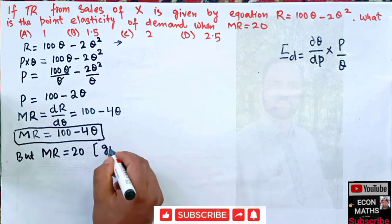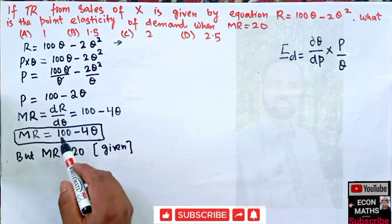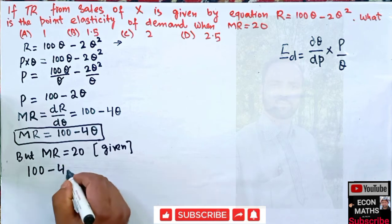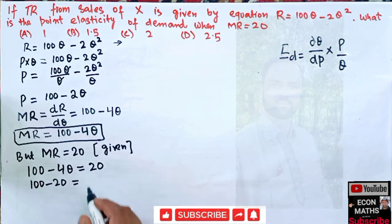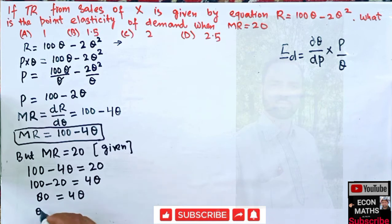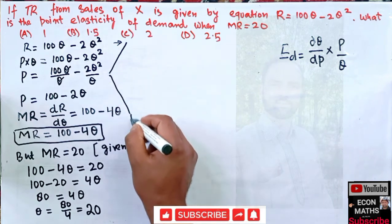We equate the marginal revenue function with the given value: 100 − 4Q = 20. Transposing, we get 100 − 20 = 4Q, so 80 = 4Q, which means Q = 80 ÷ 4 = 20. Our equilibrium quantity is Q = 20.